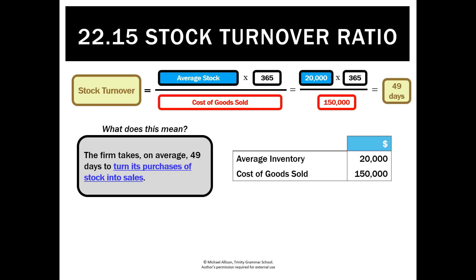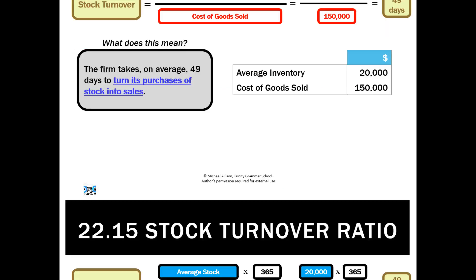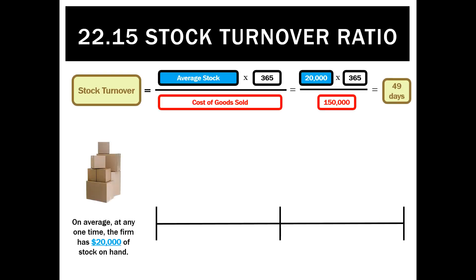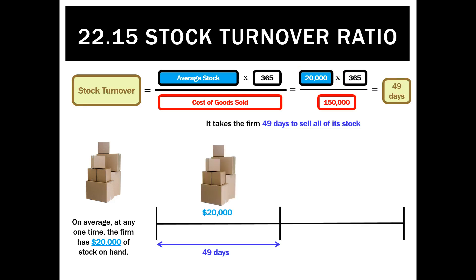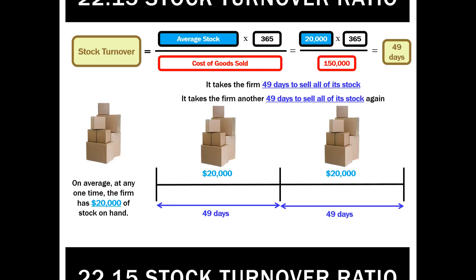So what did that mean? That meant that on average the firm turns its purchases of stock into sales every 49 days. At any one time this business has $20,000 of inventory — based on the average stock calculation — and on average it took 49 days to sell it, then another 49 days to sell the next $20,000, and so on.